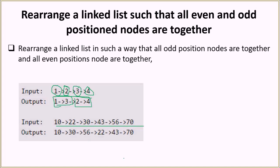Let's see another example: 10, 22, 30, 43, 56, and 70. Here the nodes at odd positions — 10, 30, and 56 — should come together, and then the remaining nodes at even positions — 22, 43, and 70 — come together.